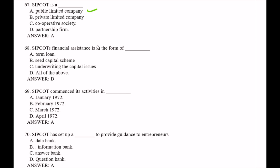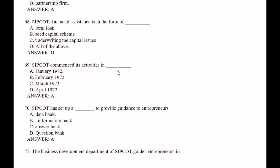Question number 68: SIPCOT's financial assistance is in the form of — Option A, term loan; Option B, seed capital scheme; Option C, underwriting the capital issues; Option D, all of the above. The right answer is Option D, all of the above.